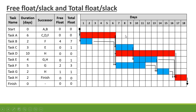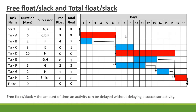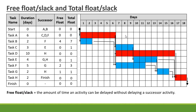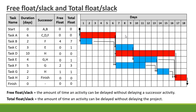Now let's have a look at free float and total float. Free float or slack is the amount of time an activity can be delayed without delaying a successor activity. Total float is the amount of time an activity can be delayed without delaying the project.